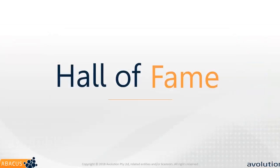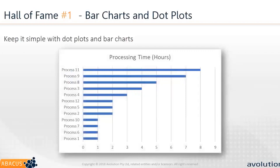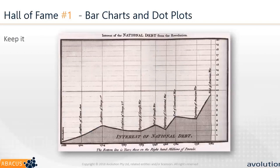Now to the hall of fame. Presenting the same discrete process data as a bar chart is much clearer — we can see there's no relationship between the processes and we can see exactly what the processing time is. There are four different processes that take one hour and there's no mistaking the values. The same could be done with a dot plot to make clear that it's the position that matters.